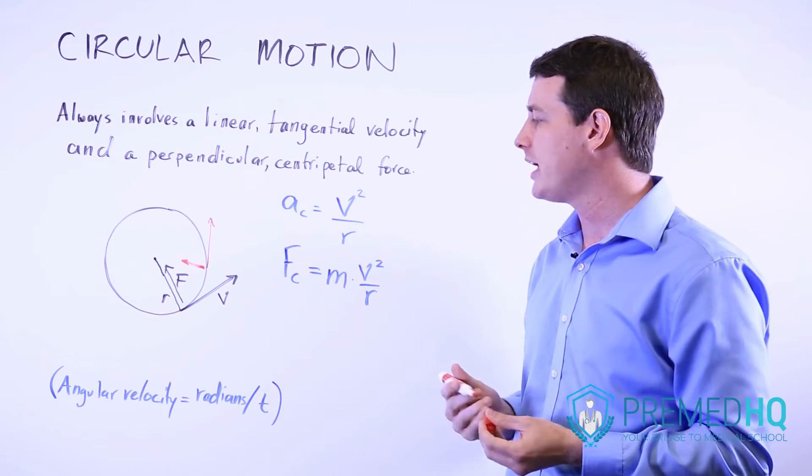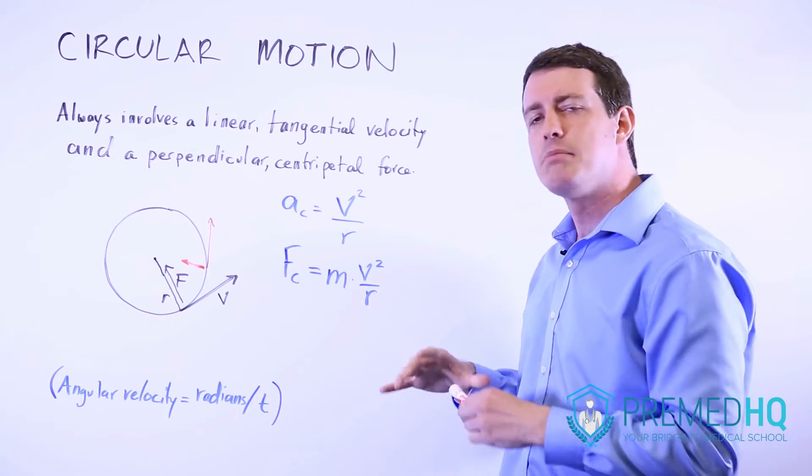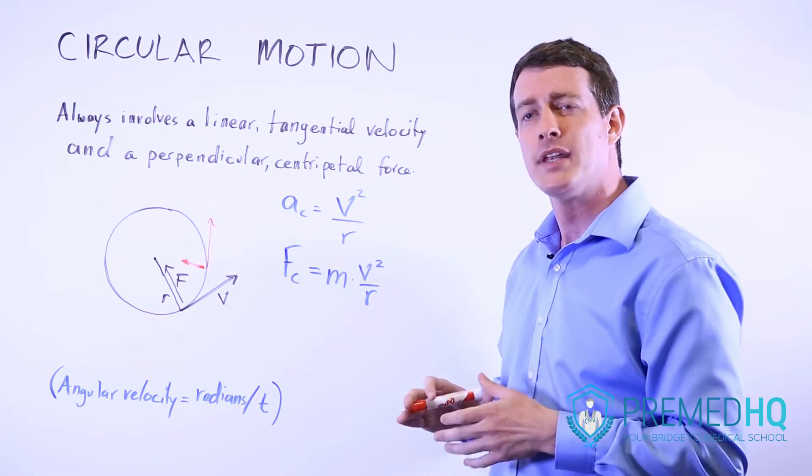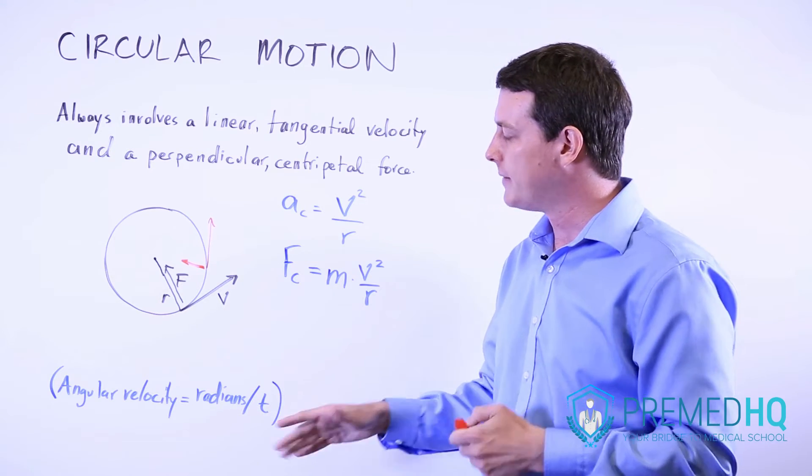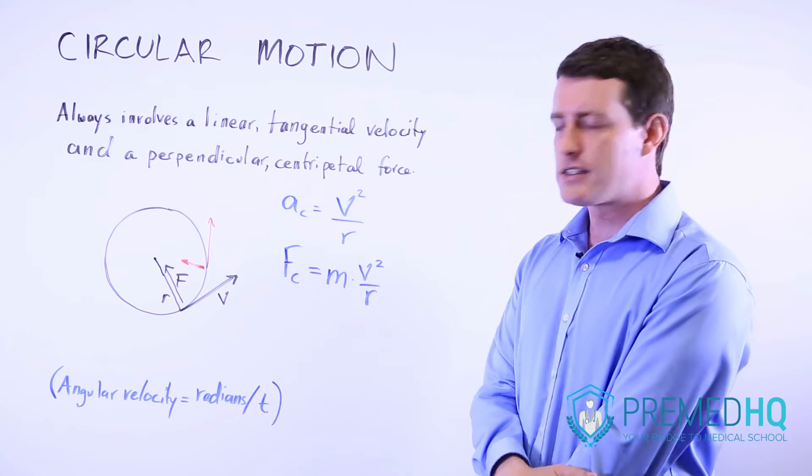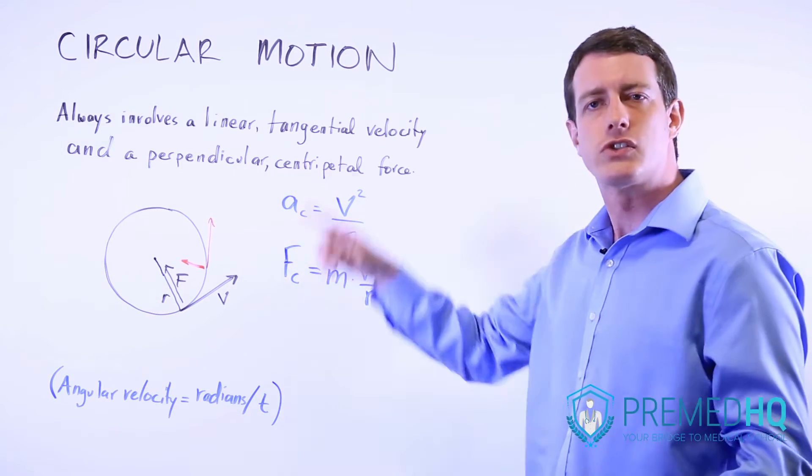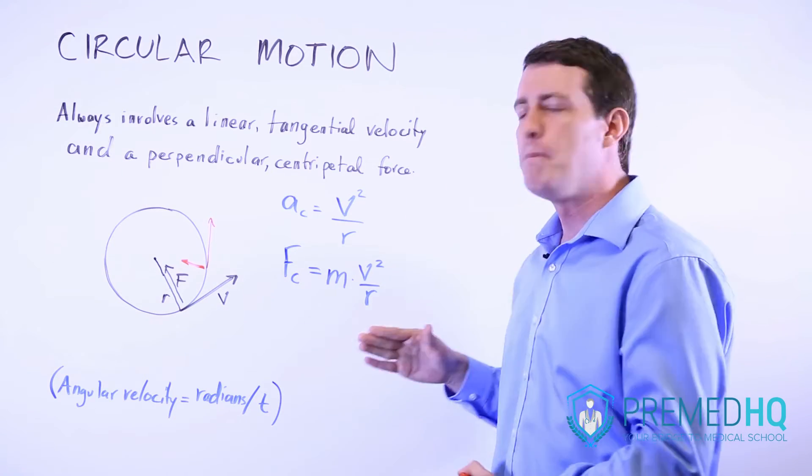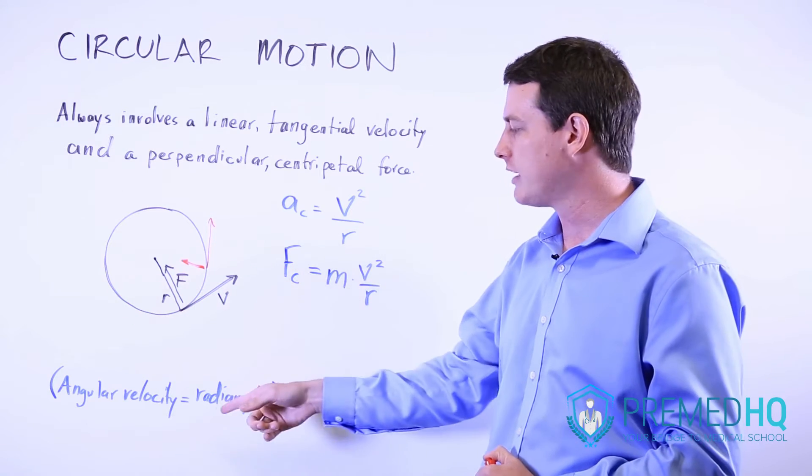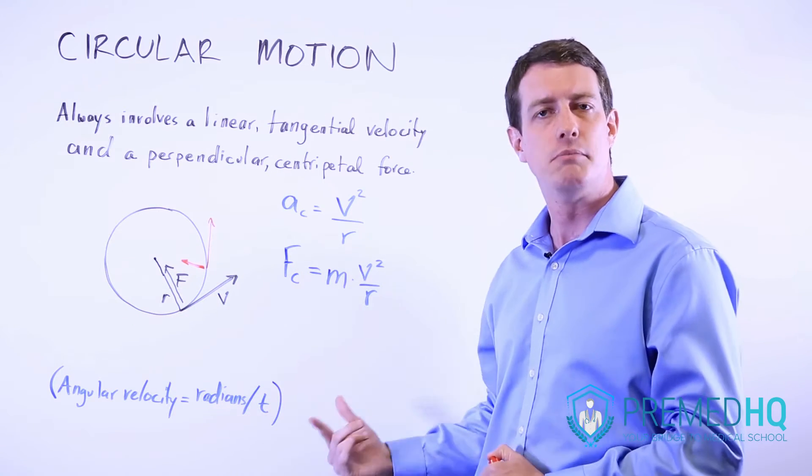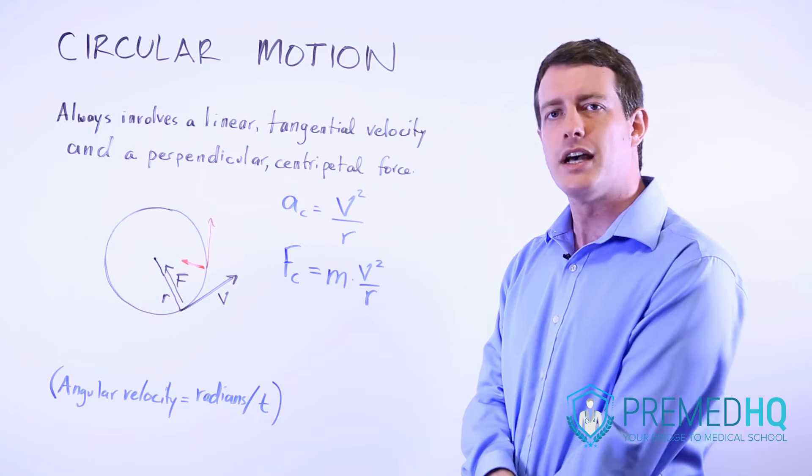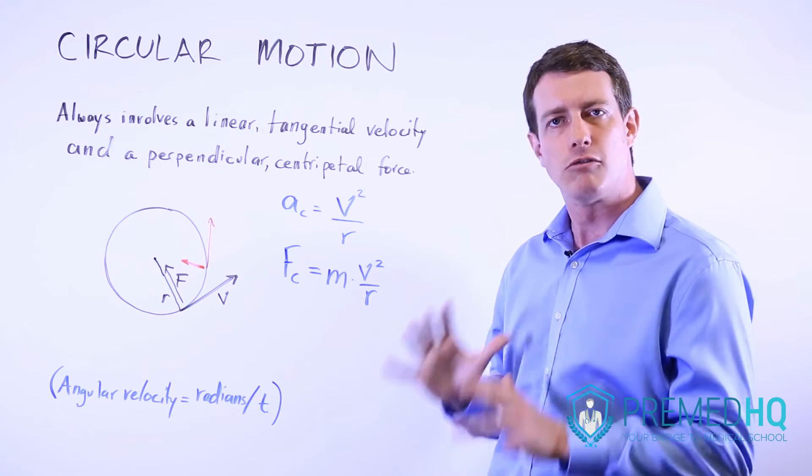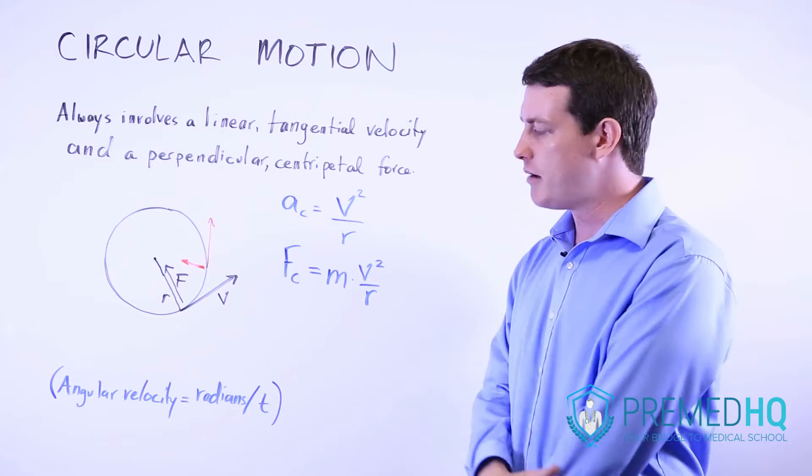Another concept you can be aware of and may not be tested explicitly on the MCAT, although it's possible, is angular velocity. Angular velocity is an indicator of how many circles it completes per unit of time. So rather than meters per second, you're looking at how many radians it completes per second. That's a topic to be aware of, but it's unlikely to be tested in a detailed formula type of way.